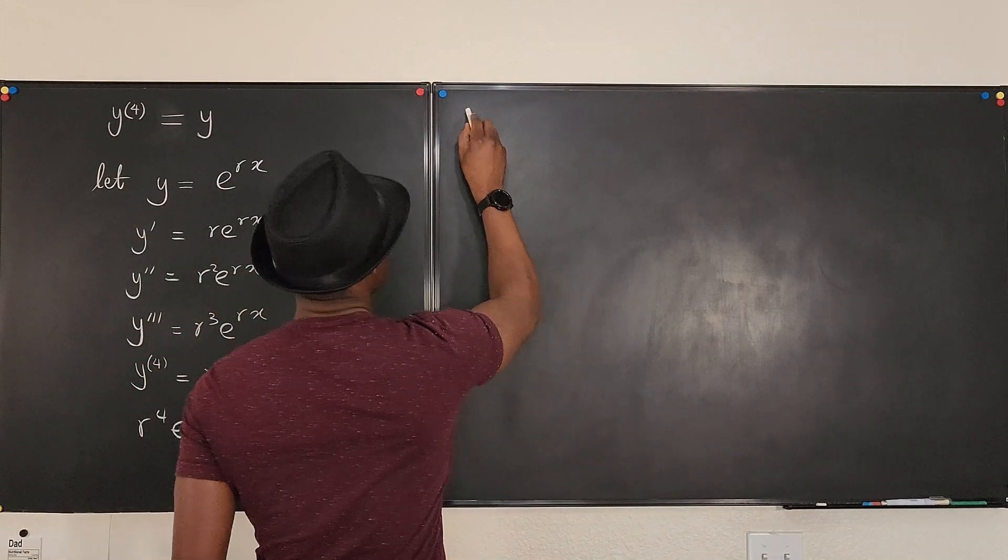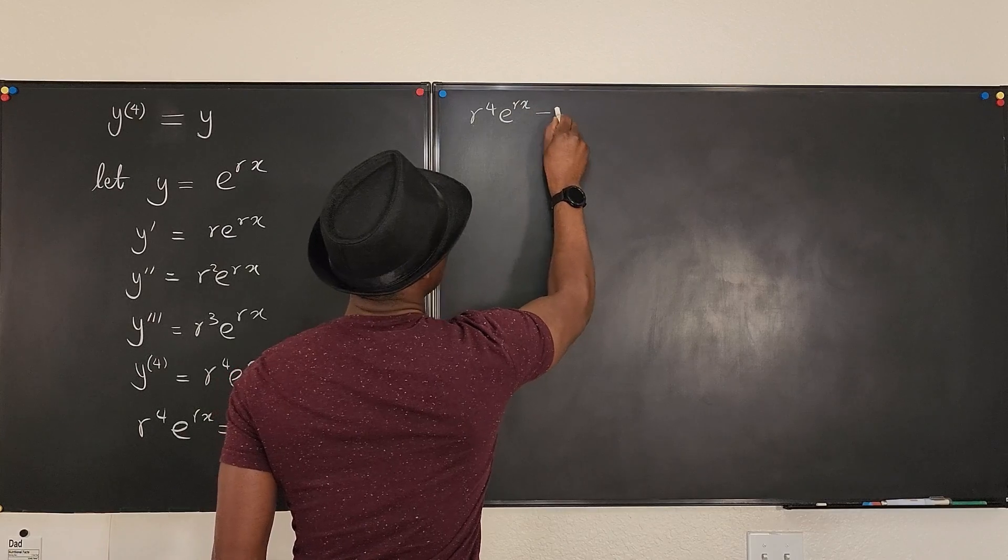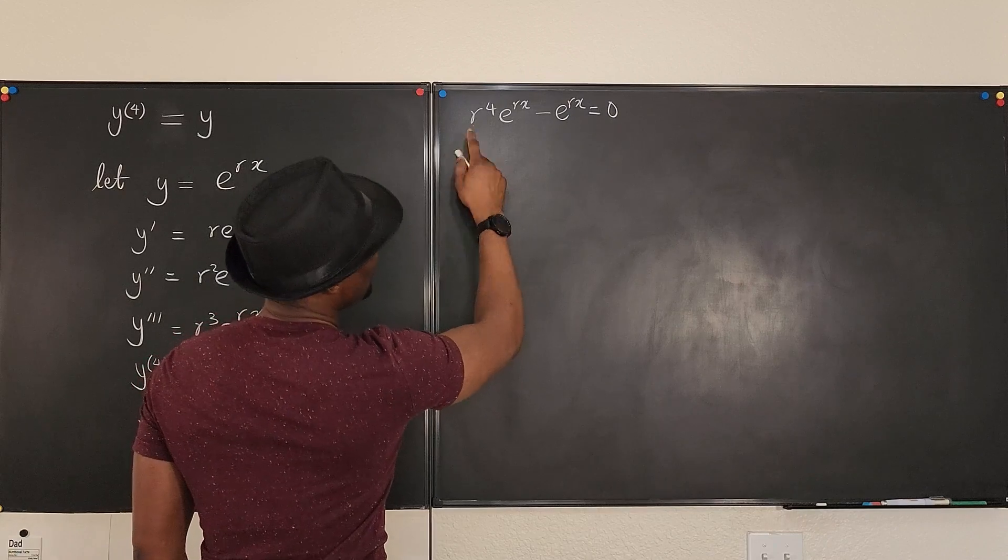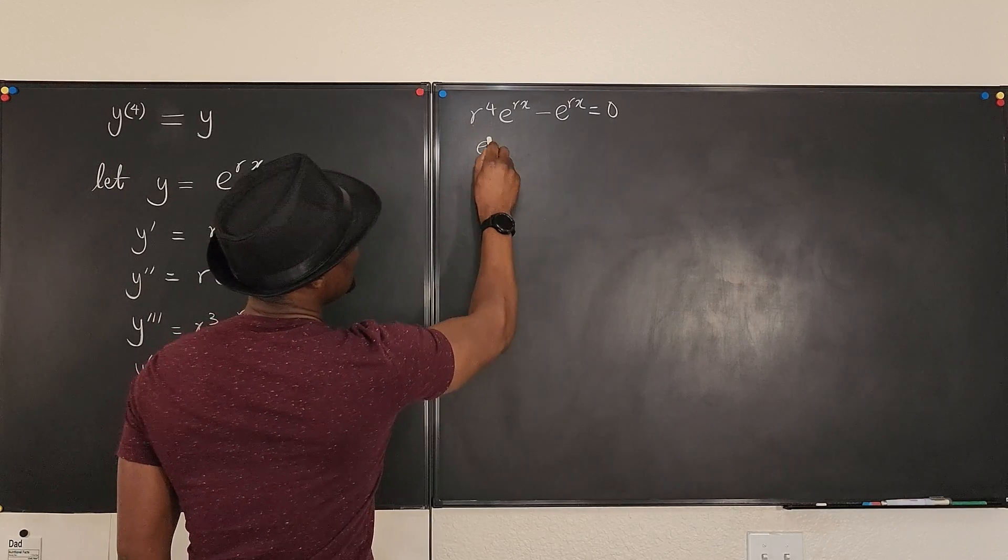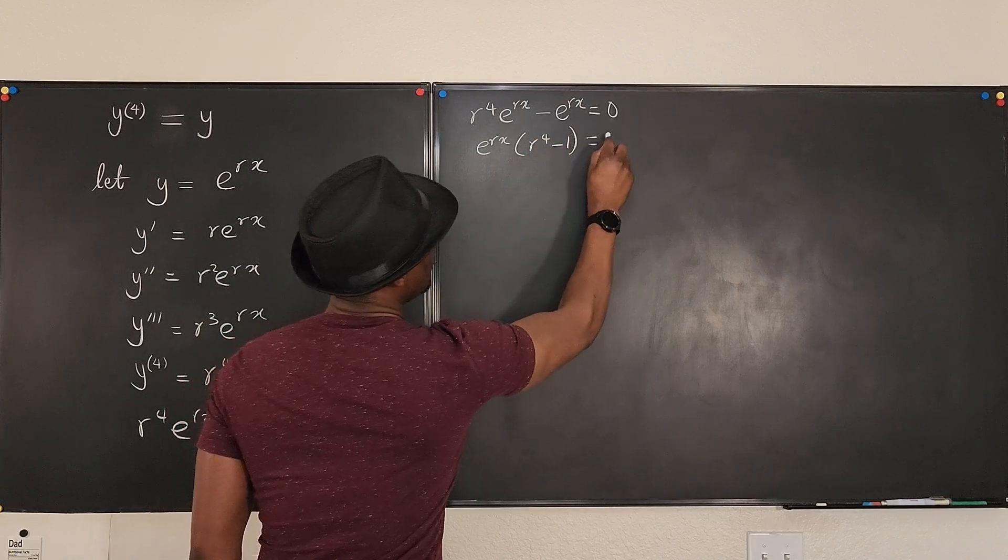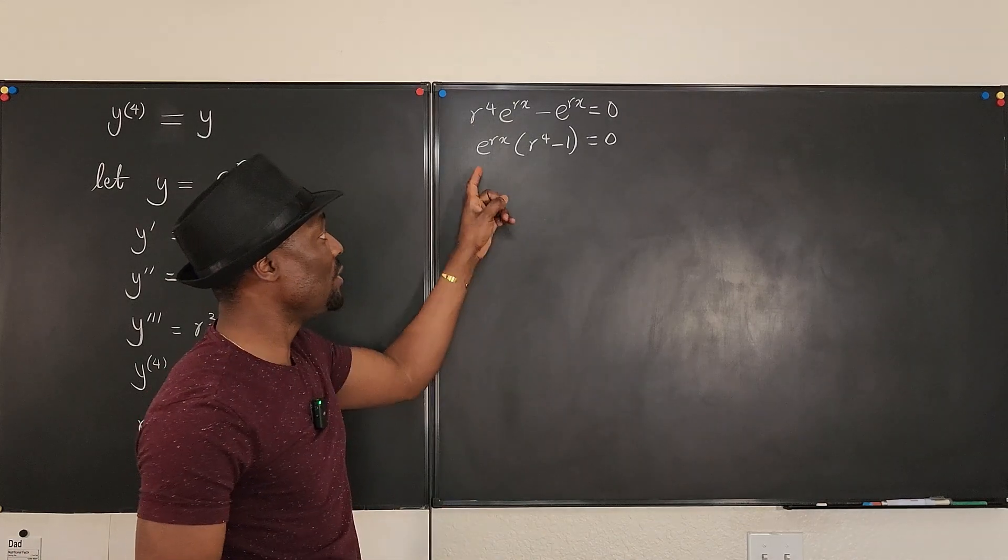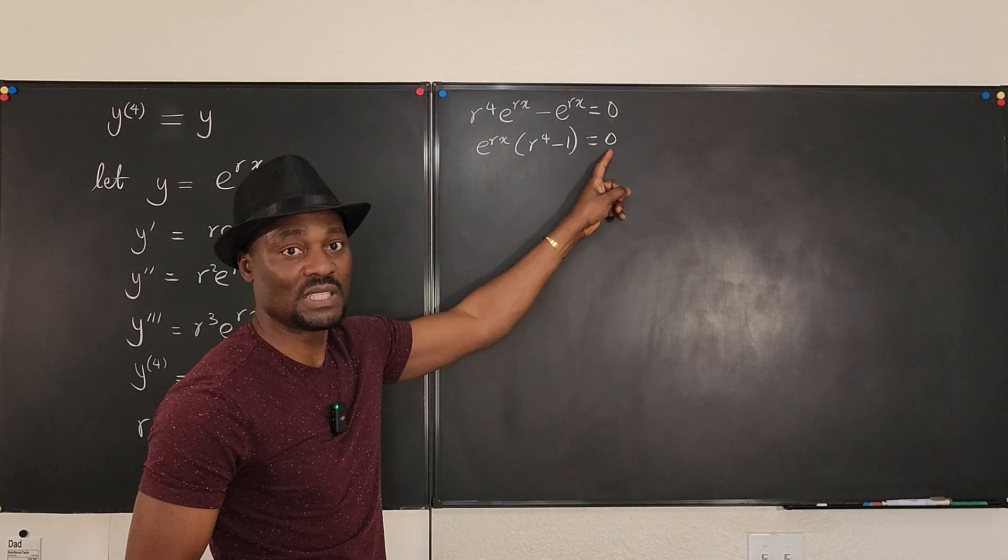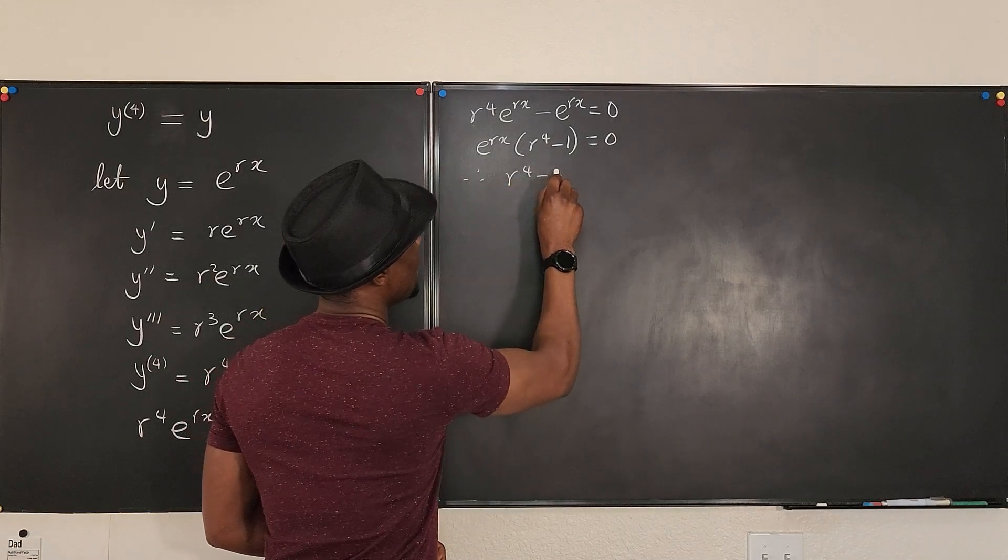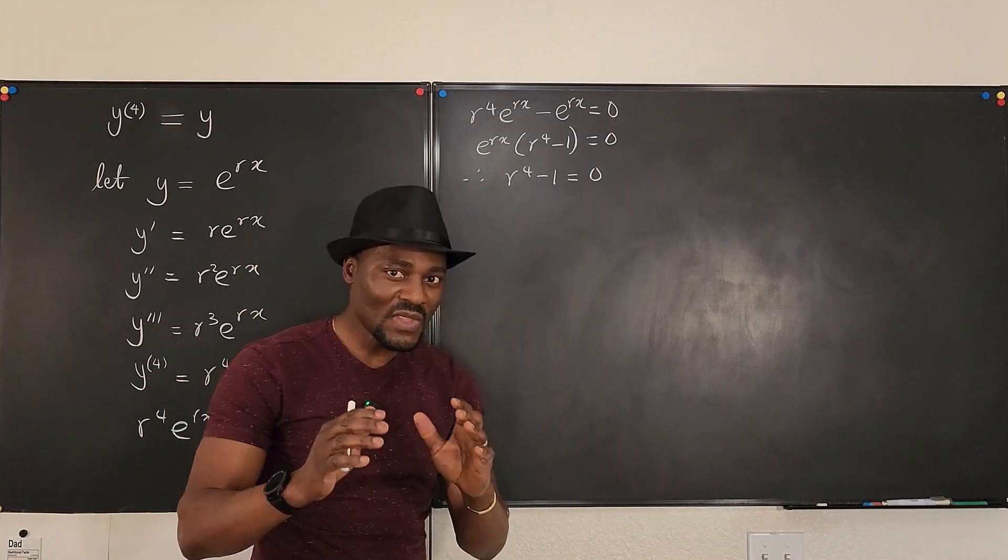Or you can as well put them on the same side and factor. Let's just do the typical thing. So two ways. You can divide both sides by e to the rx because e to the rx can never be zero. Or you can just move this over and say r to the fourth e to the rx minus e to the rx is zero. So that means that we've got e to the rx times r to the fourth minus one equals zero. And just as we said, e to the rx can never be zero, which means this is the only thing that can be zero. So we can say, therefore, r to the fourth minus one is equal to zero. And now we need to solve this.